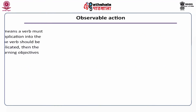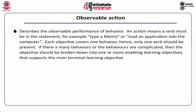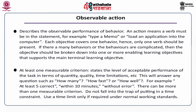Observable action: it describes the observable performance or behavior. An action means a verb must be in the statement — for example, 'type a memo' or 'load an application into the computer.' Each objective covers one behavior; hence, only one verb should be present. If there are many behaviors or the behavior is complicated, then the objective should be broken down into one or more enabling learning objectives that support the main terminal objective. At least one measurable criteria should state the level of acceptable performance of the task in terms of quantity, quality, time or limitation.